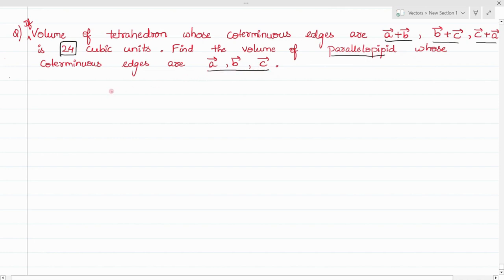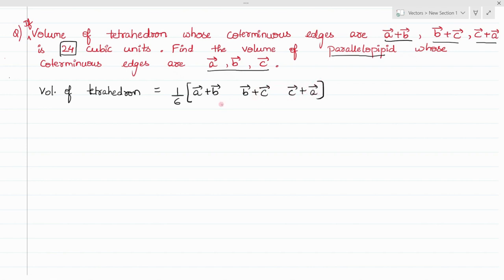So volume of tetrahedron formula is one by sixth of the co-terminus edges. Here the co-terminus edges are A plus B, B plus C, and C plus A. We have seen a result for this before, we have even solved a question for this.